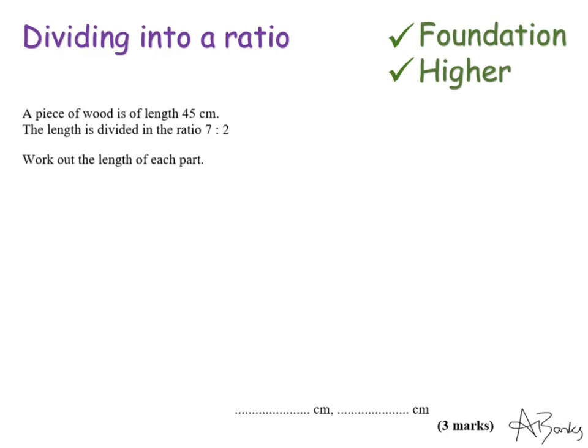So this question says, a piece of wood is of length 45 centimeters. The length is divided in the ratio 7 to 2. Work out the length of each part.